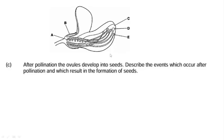Let us now move on to question C. Question C reads: after pollination, the ovules develop into seeds. Describe the events which occur after pollination and which result in the formation of seeds. Pollination is the transfer of pollen grains from the male reproductive part of a flower, the anther, to the female reproductive part, which is the stigma.